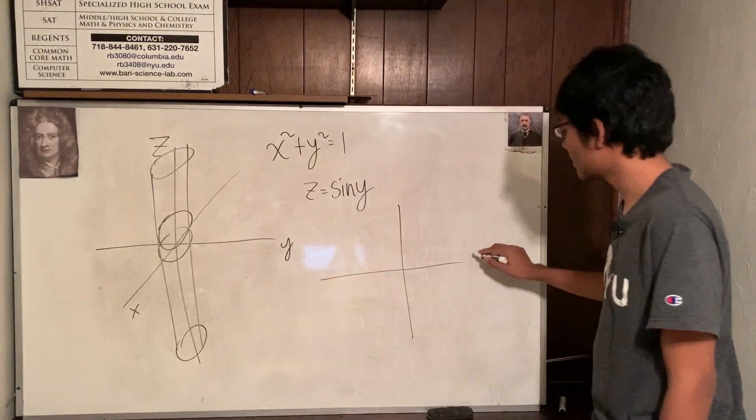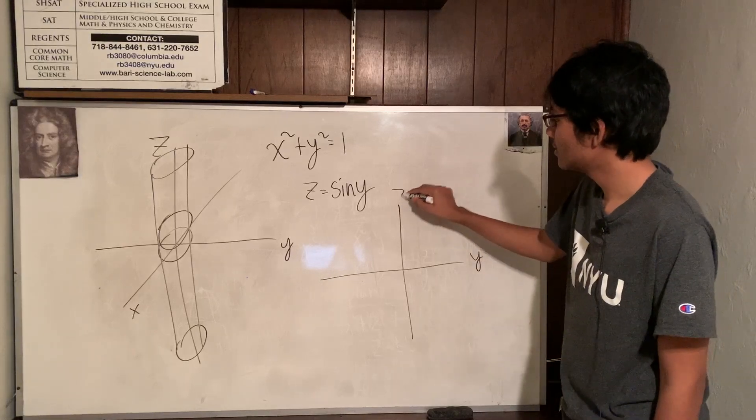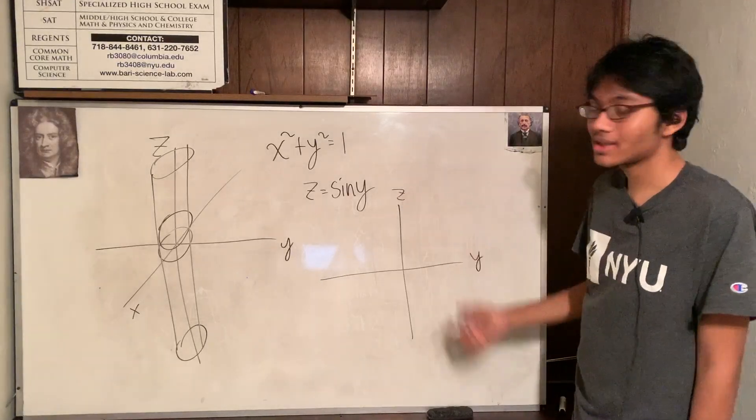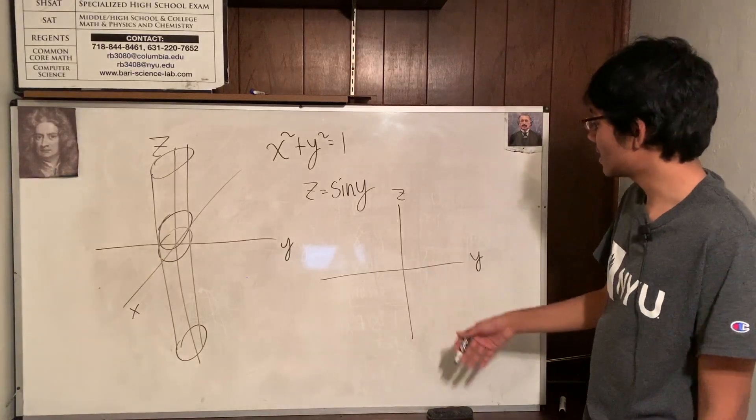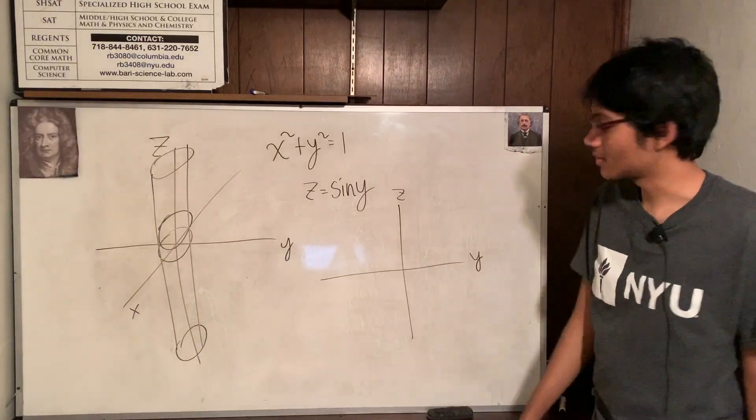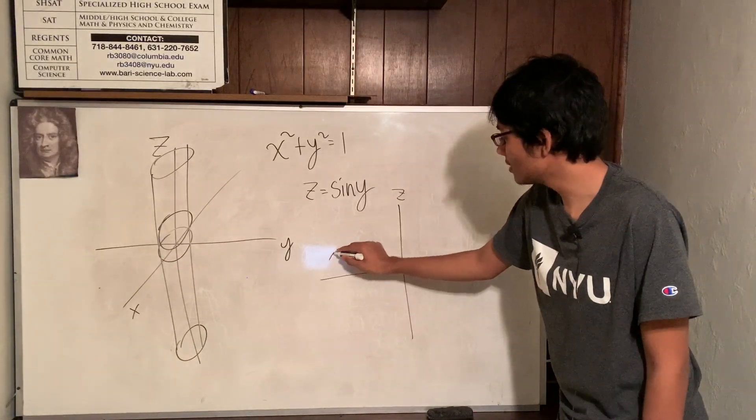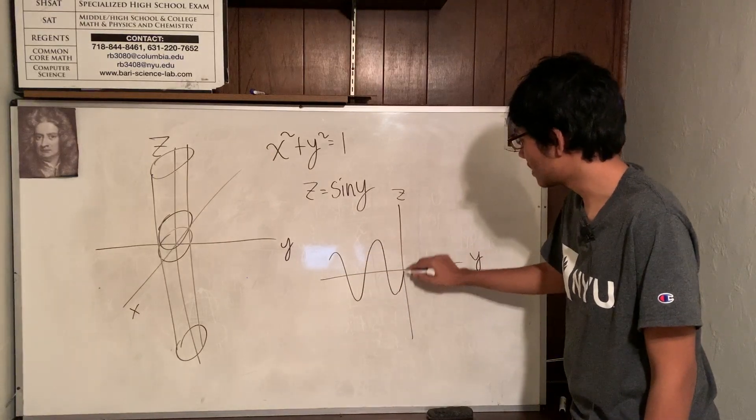Well, you know how to graph sine of X on the XY plane. Well, do the same thing on the YZ plane. So, Z is equal to sine of Y. What's that going to look like? Well, that's going to look like a sine curve. It's going to look like a sine curve, right?